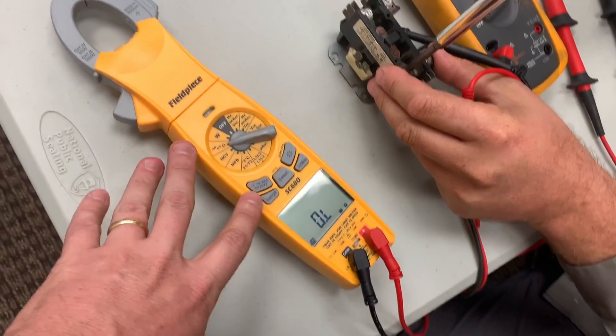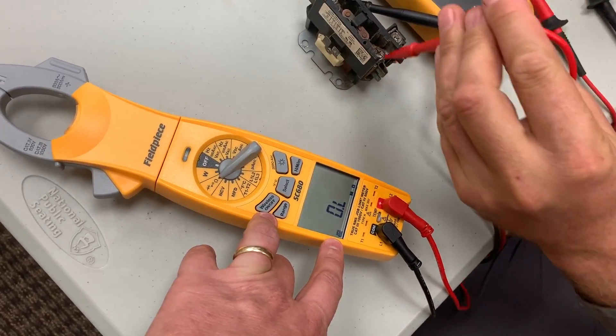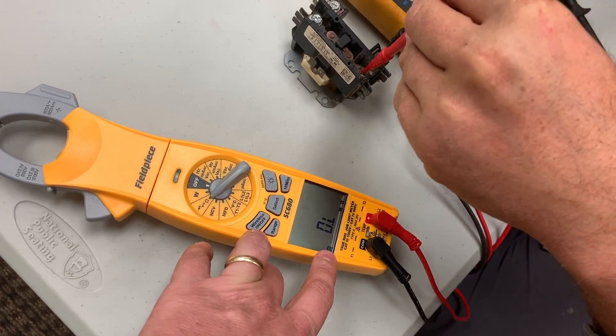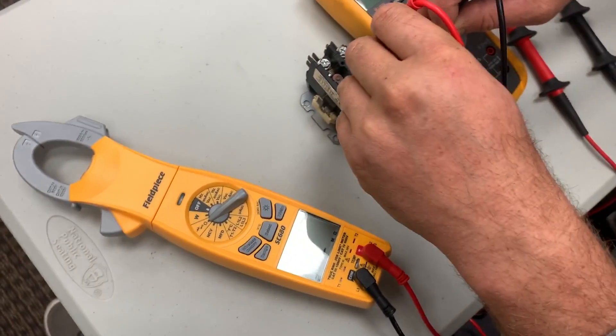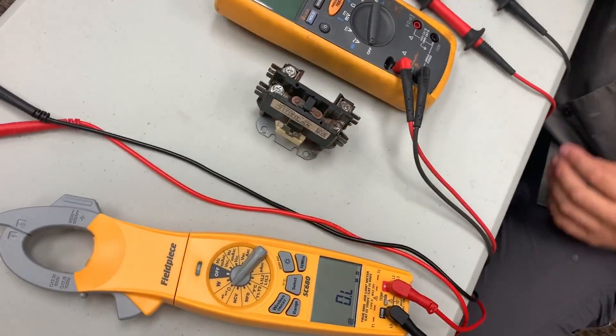The thing to consider here is when you're using a typical multimeter, it's using pretty low voltage to actually make the path. This is why in some cases you won't find a short circuit with a regular meter on a compressor, motors, or switchgear. Now we're going to use the Fluke 1587.